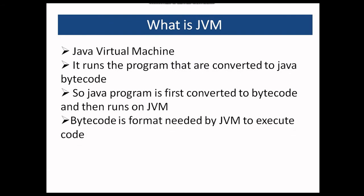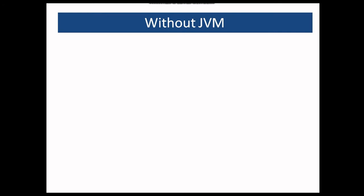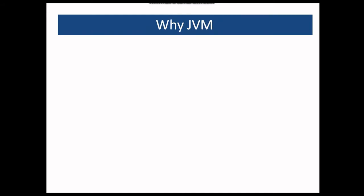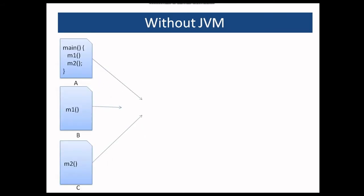Let's see how programs run on the processor without JVM. Let's say we have three files: one with the main method and other two with the methods called inside main. First they are given to the compiler, and then compiler converts them to the object files. Object files are the files that have code in machine understandable format.